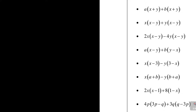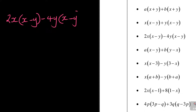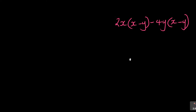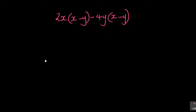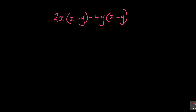Let's look at the next one: 2X times bracket X minus Y, minus 4Y times bracket X minus Y. Pay attention to this because it can confuse you. Same concept — X minus Y and X minus Y. That bracket is the same. So equal to X minus Y. What is outside? You have 2X and minus 4Y.